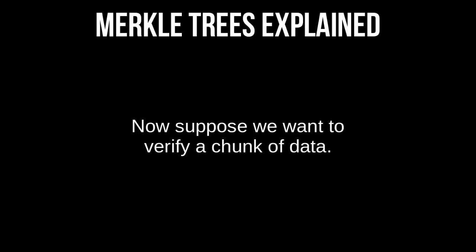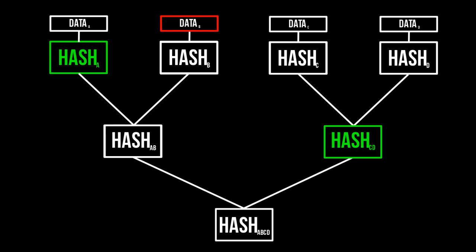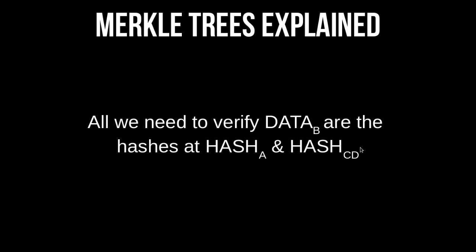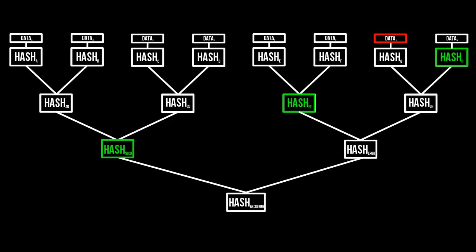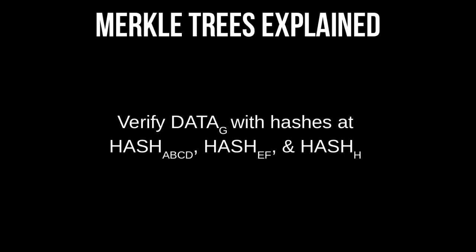Now suppose we want to verify a chunk of data. In this example, we want to verify that data B is the correct data we wanted. We actually only need a couple of hashes — hash A and hash CD — and then we can check whether it's right. All we need to verify data B are those two hashes. Scaling up to a bigger tree, if we want to validate data G, we just check the relevant hashes along the path, and that tells us whether data G is valid.